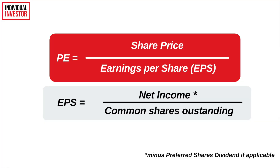The formula for P/E ratio is simple: you take the share price and divide it by the earnings per share, or EPS. EPS is calculated by dividing the net income minus preferred share dividends, if applicable, over the common shares outstanding. EPS is also one of the most important figures to determine a company's profitability. Remember, when you buy a share of a stock, you're buying a real piece of that business and effectively a real piece of the earnings it produces.